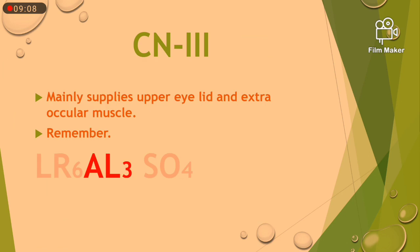Now, the third cranial nerve. We know chrome alum, that is CR6AL3SO4. Now, instead of CR, if you write LR, you can remember 3 cranial nerves: the 6th cranial nerve, the 3rd cranial nerve, and the 4th cranial nerve. Concerned with the 3rd cranial nerve — it mainly supplies the eyelid and extraocular muscles. So in the mnemonic LR6, All 3, SO4 — except lateral rectus and superior oblique — all other extraocular muscles, including upper eyelid muscles, are supplied by the 3rd cranial nerve.